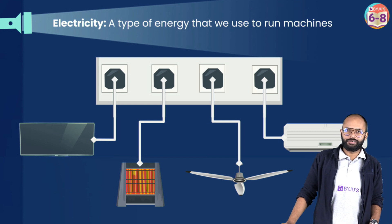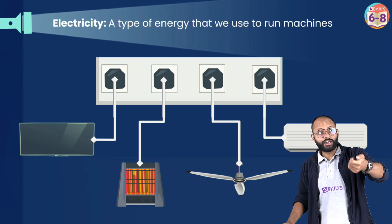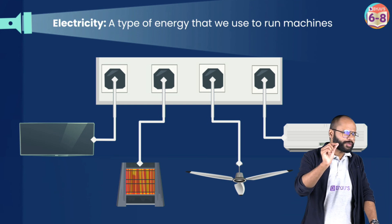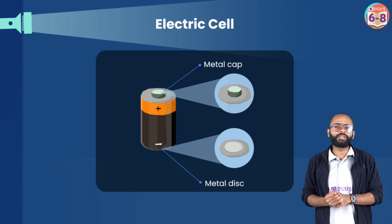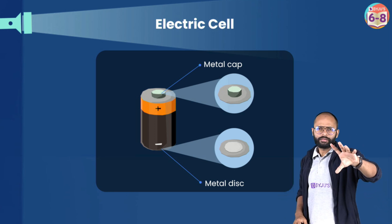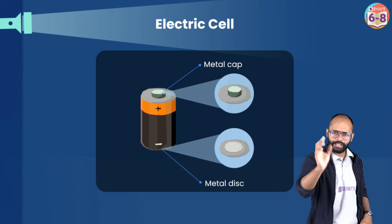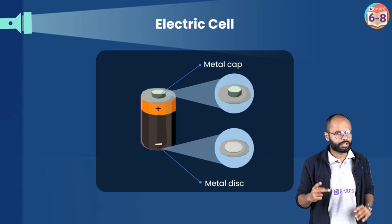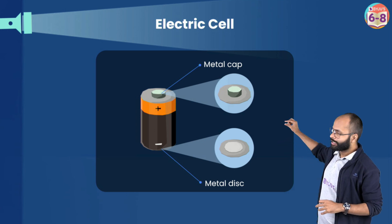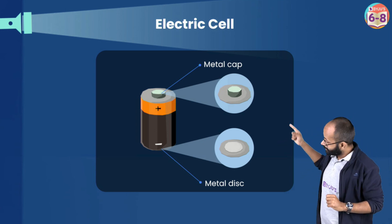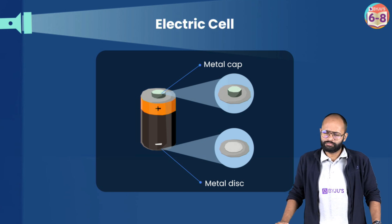Wherever we use electrical energy — basic things like your remote or torch — all of them have a very small thing called the cell. What is an electric cell? It's something that provides you with electrical energy. The most basic question is: if someone shows you a cell and removes the markings, can you identify which is the positive terminal and which is the negative terminal?